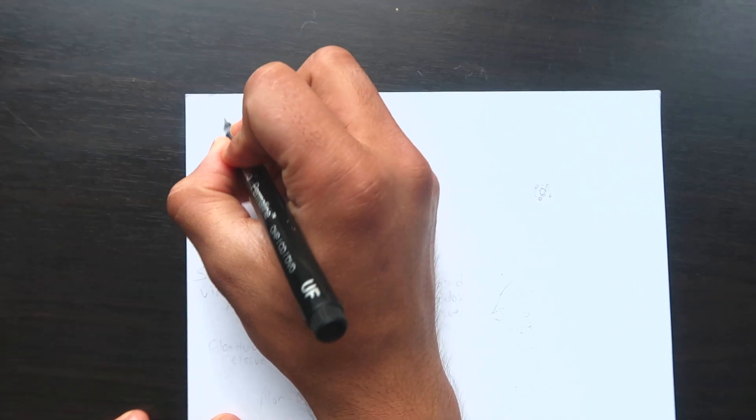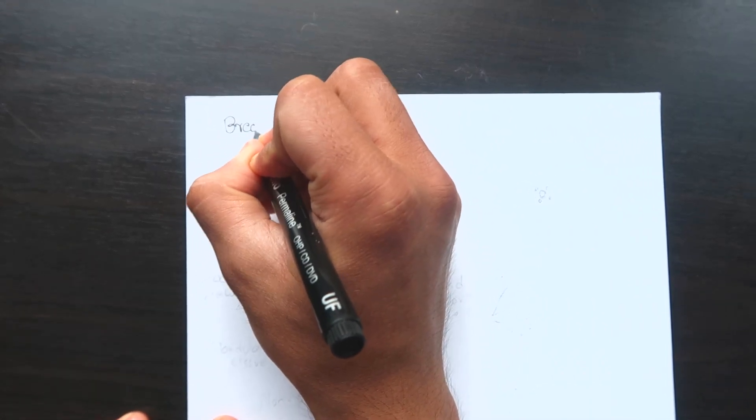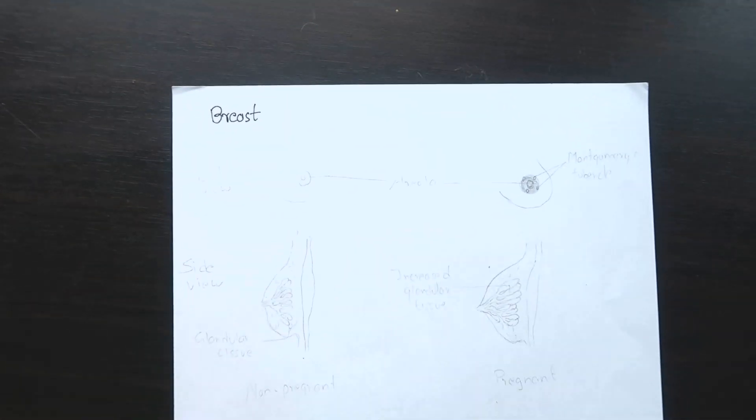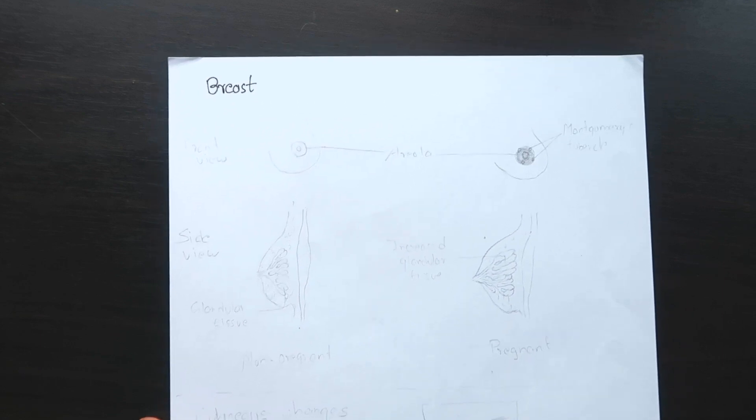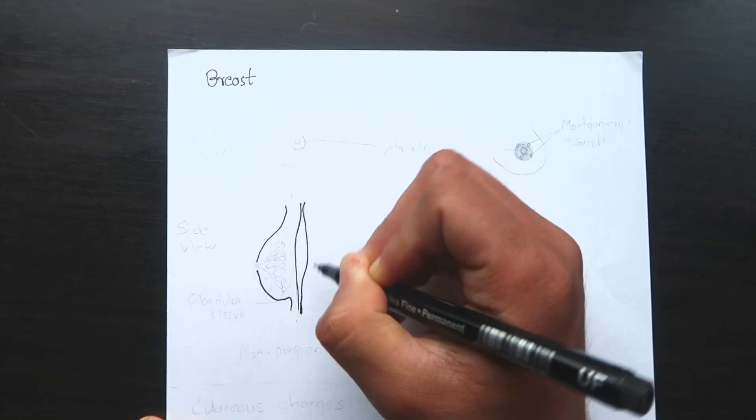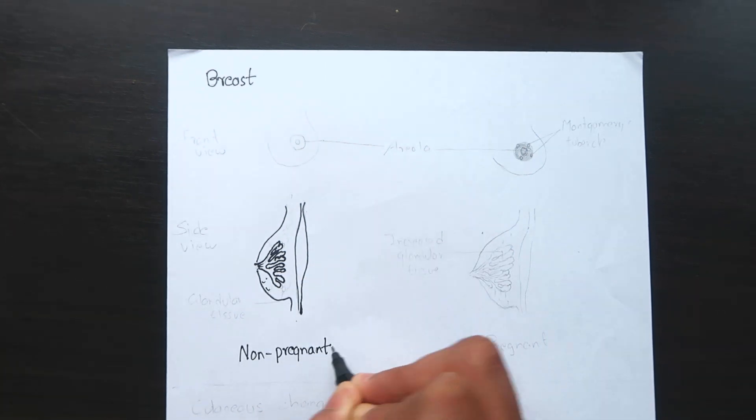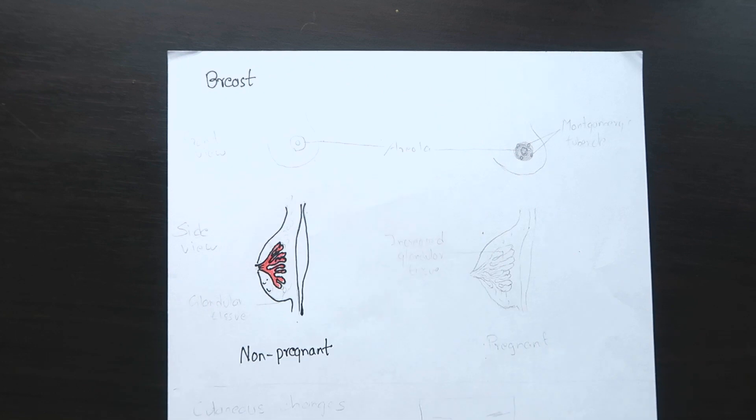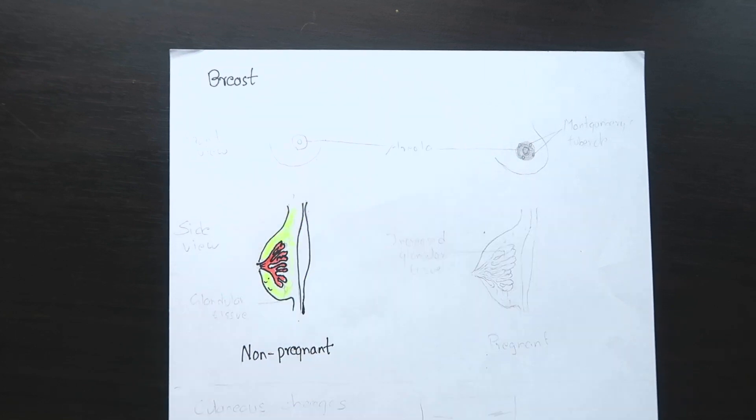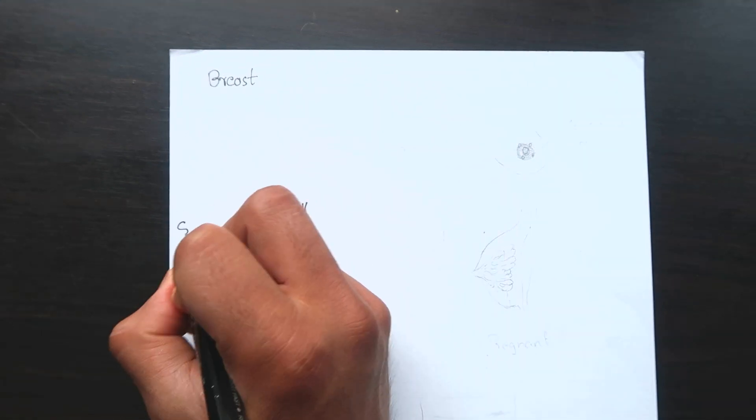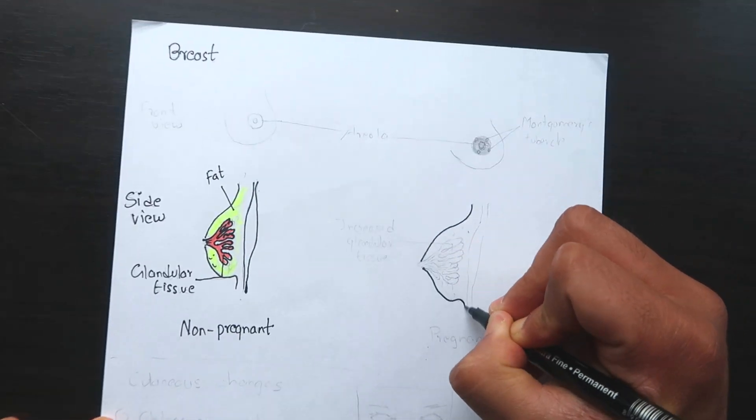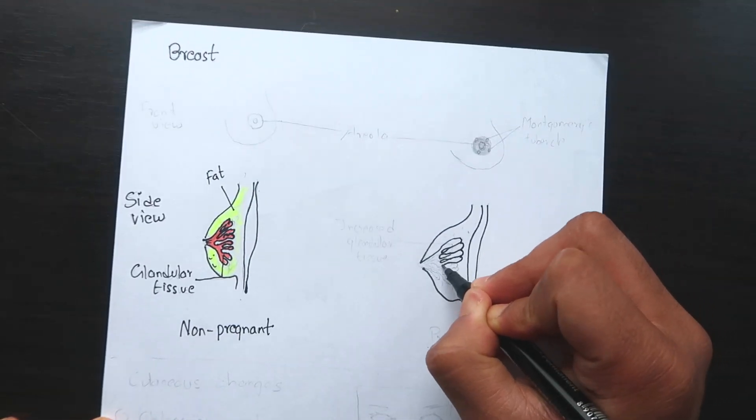The changes in the breasts are best evident in primigravida, that is those who are pregnant for the first time. There is increased size of the breasts which is evident even in early weeks. This is due to marked hypertrophy and proliferation of the ducts and the alveoli. Vascularity is also increased which results in appearance of bluish veins running under the skin.